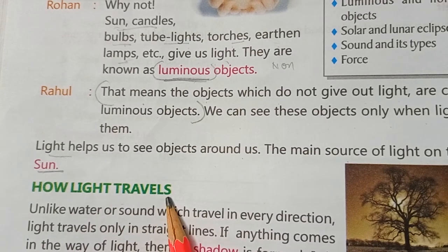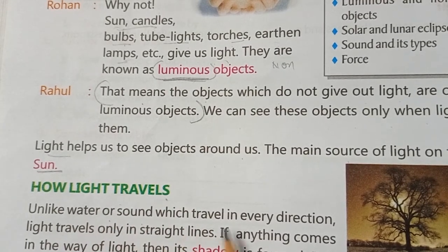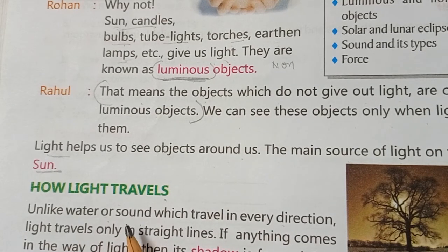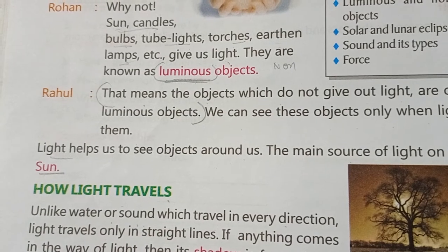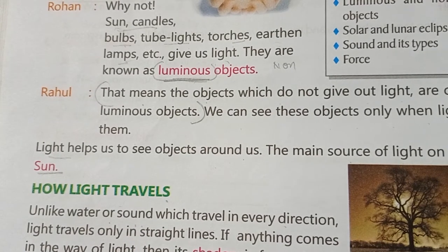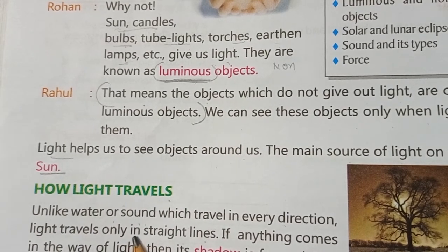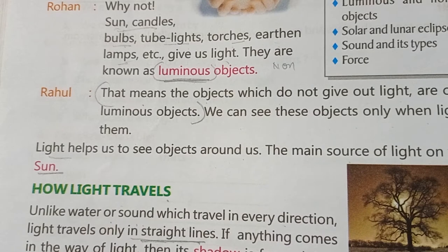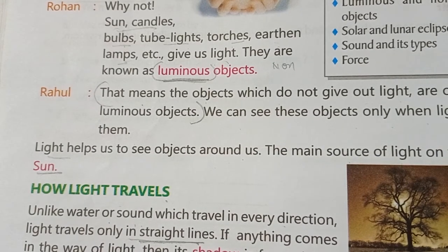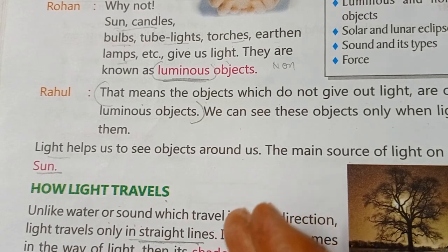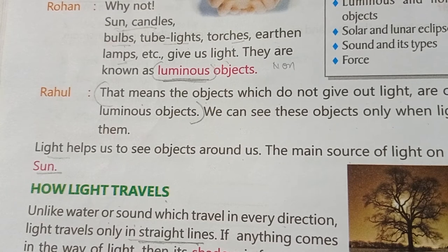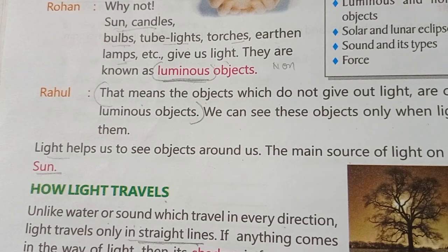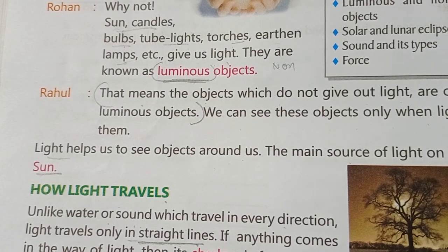Now, how does light travel? Unlike water or sound, which can travel in every direction, light travels only in a straight line. If you take a torch and a paper with a hole in it, you will see light only through that hole — that means light is traveling in a straight line.